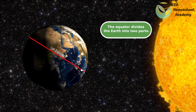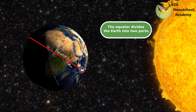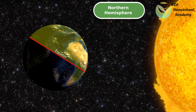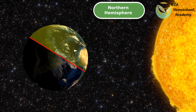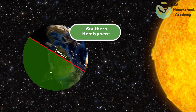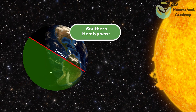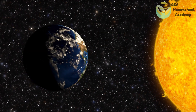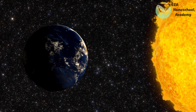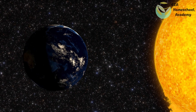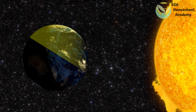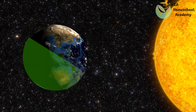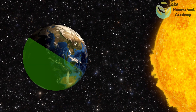The equator divides the Earth into two parts: the Northern Hemisphere and the Southern Hemisphere. As the Earth rotates around the sun on its tilted axis, the hemisphere that is pointing towards the sun will receive more sunlight than the hemisphere that is pointing away from the sun.